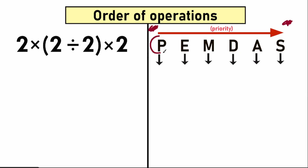The first letter P has the highest priority, and P stands for parentheses — this type of bracket. Sometimes people use square brackets or curly brackets, but in 95% of cases we use parentheses. Parentheses are the grouping symbol. We need to evaluate the expression inside parentheses first. This is our first step: evaluate the expression inside parentheses, then move forward to the next step.